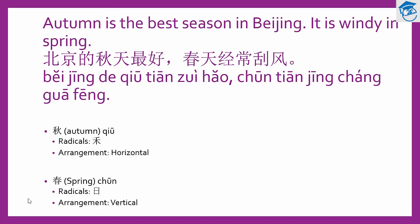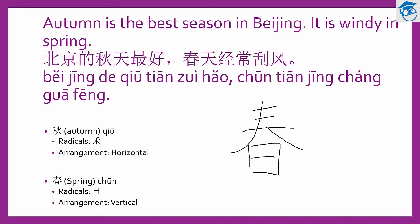The next new word is 春. 春 means spring — the spring season. This is the pinyin 春, and the radical is on the bottom. The arrangement is vertical, with top and bottom components. Let's look at how to write 春: nine strokes for this word.